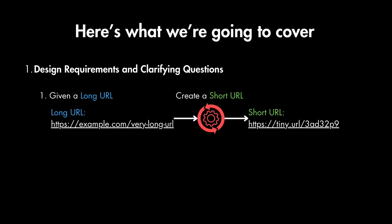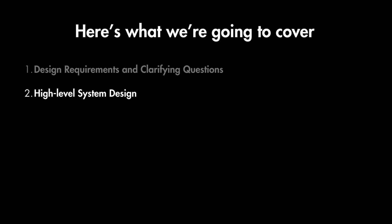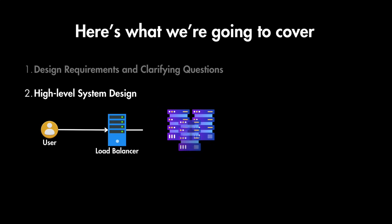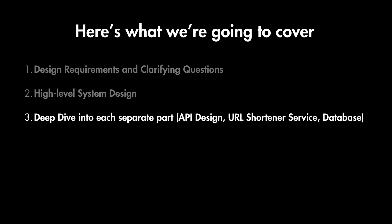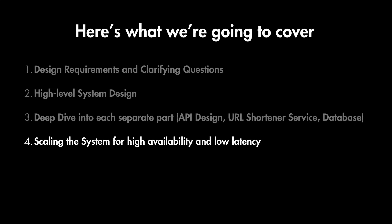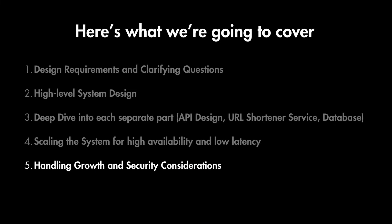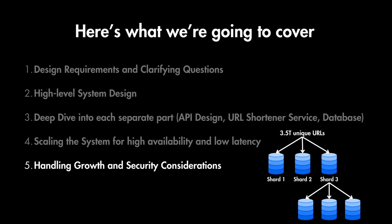Here are the areas we are going to cover. We'll start by outlining the design requirements and go through some clarifying questions for the interviewer to better understand the scope and constraints. Next we'll sketch a high-level architecture with the key components and how they interact. We'll dive into specifics including the API design, the URL shortener service, and the database. We'll implement strategies to scale the system horizontally and ensure high availability and low latency as it grows, and finally cover database replication and sharding strategies.